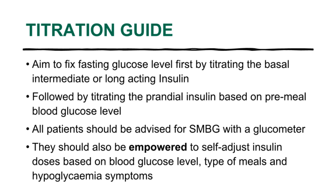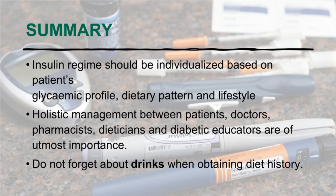All patients on insulin should be advised to self-monitor blood glucose with a glucometer, and should be empowered to self-adjust insulin doses based on their own profile and glucose levels. In summary, there is no hard and fast method to achieve desired sugar control — all insulin regimes should be individualized. Building good rapport between patients, doctors, diabetic pharmacists, and dieticians is also key to managing a diabetic patient.